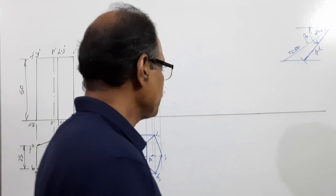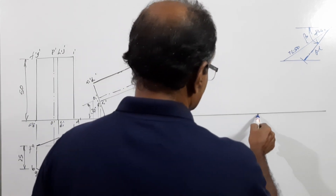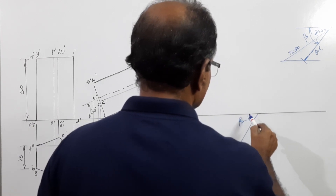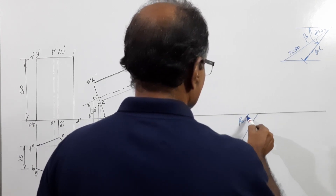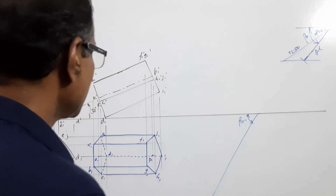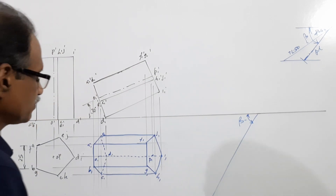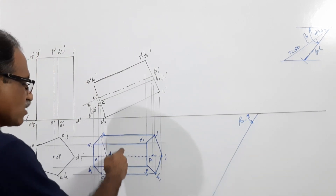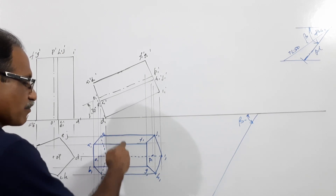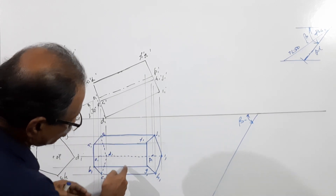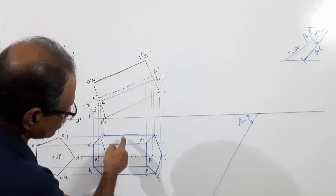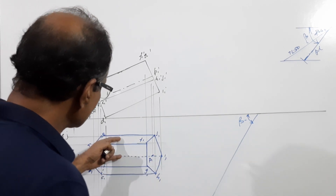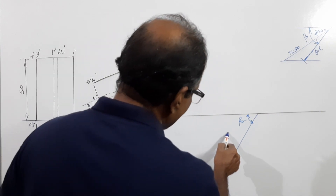With that beta, draw a line. This distance is equal to this distance — they are the same. When I prepared the drawing, this looks a little bit smaller and this looks bigger, but both will be the same. So take this distance and draw two lines.